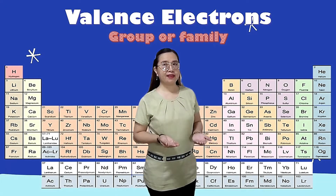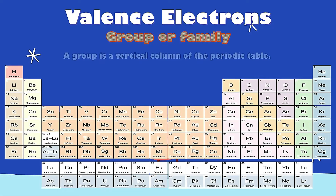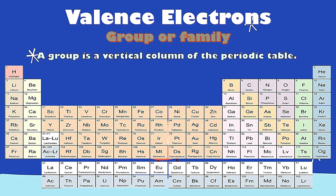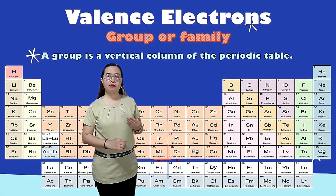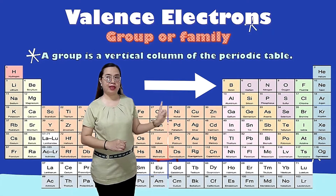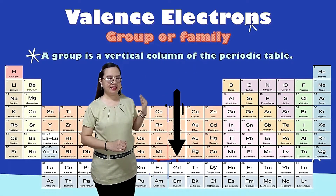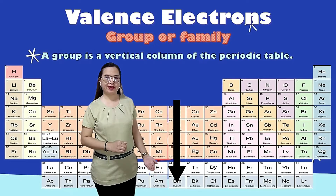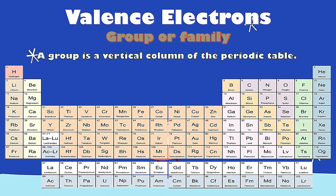What is group or family? When you say group, it is the vertical column of the periodic table. In our periodic table, this is horizontal and this is vertical. Horizontal is known as the periods, while vertical is known as the group or family.